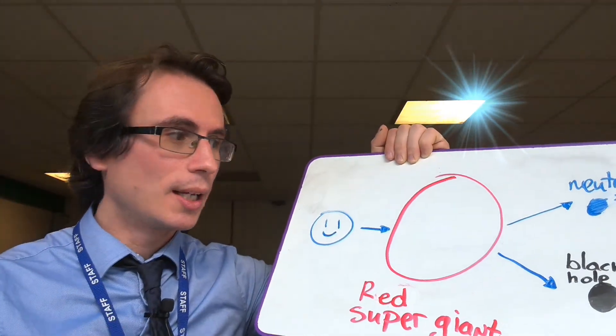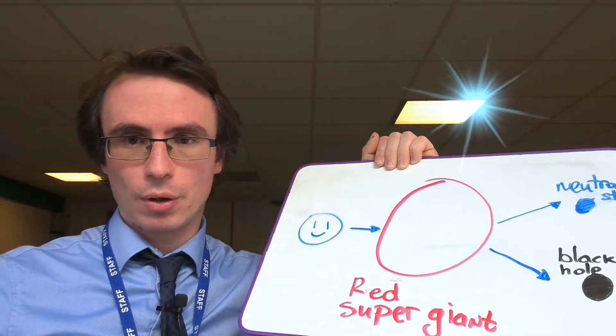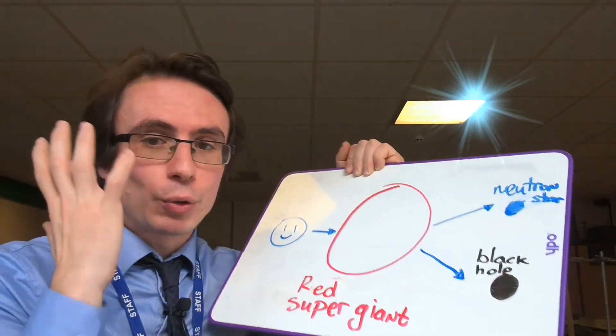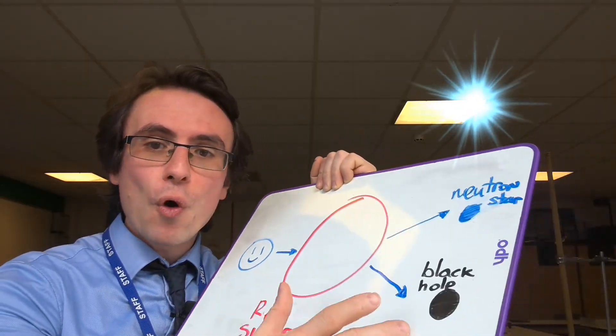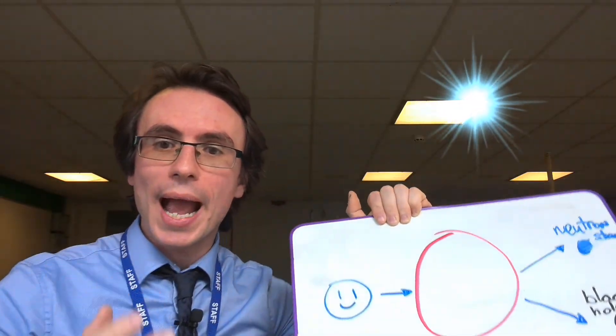If the star is even larger, though, gravity will win. Eventually, gravity wins and it will form an object known as a black hole, in which the mass of a gigantic star collapses into a singularity — forming a black hole, which are some of the most interesting objects in the universe.